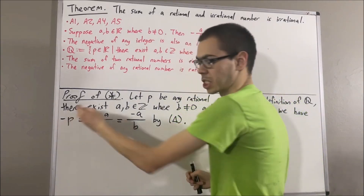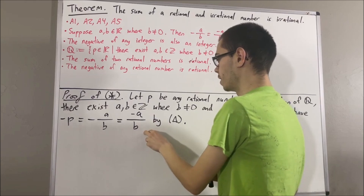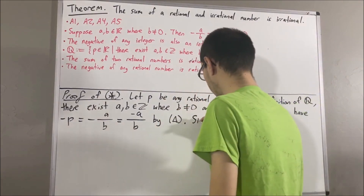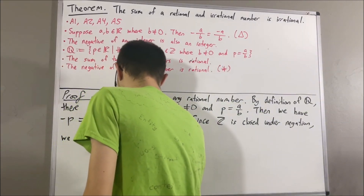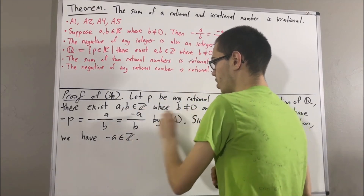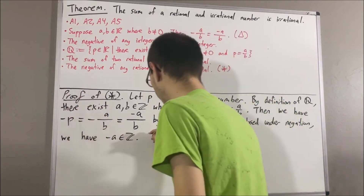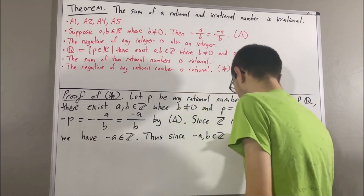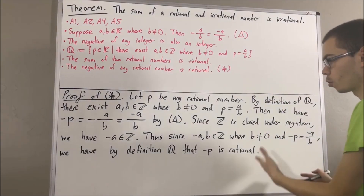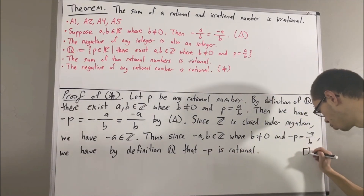To show that negative p is a rational number, all that's left to show is that negative a and b are integers, where b is non-zero. Well, since a is an integer, and we know that the negative of any integer is also an integer, that implies the negative of a is an integer. So now we see that negative a and b are integers, and b is non-zero. Since negative p is equal to negative a over b, that tells us by definition of the rational numbers that negative p is rational. We've shown if p is any rational number, then the negative of p is also rational. This proves star.